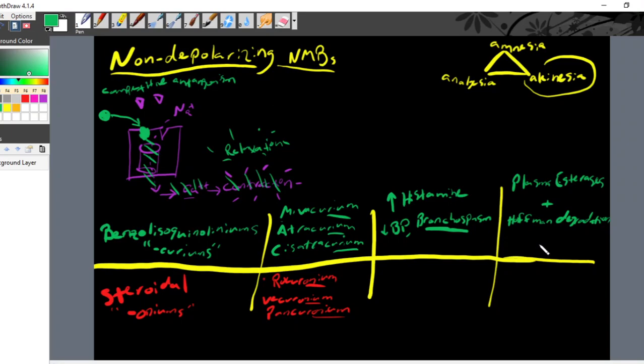The benzylisoquinoliniums are degraded by plasma esterases and Hoffman degradation. You can see how this could be useful in patients who have organ dysfunction, because you don't need a functioning organ to break these types of medications down. You just have these specific enzymes in the blood, and these medications will just break down on their own at physiologic temperature and pH.